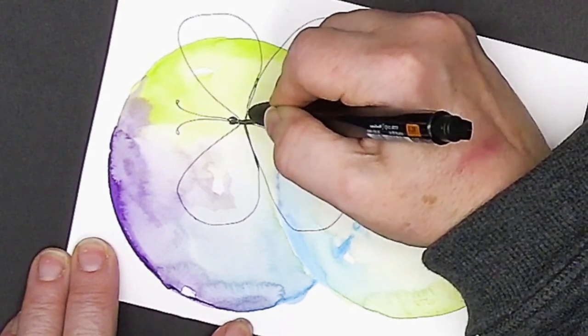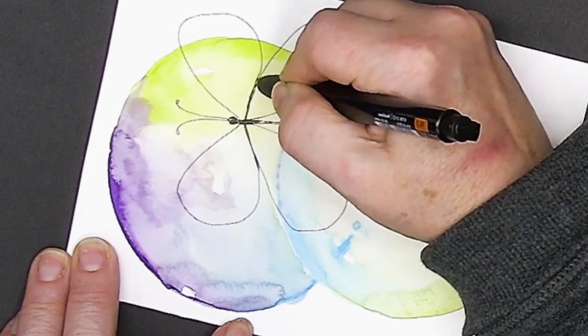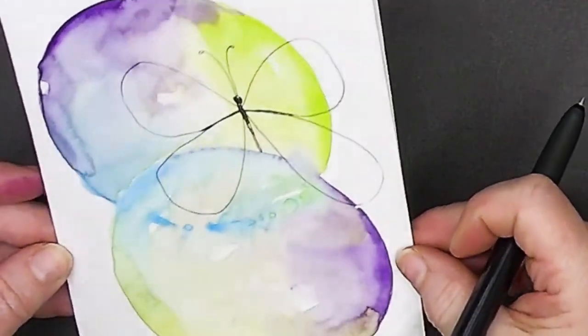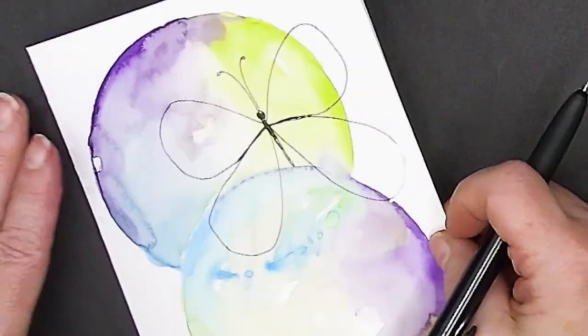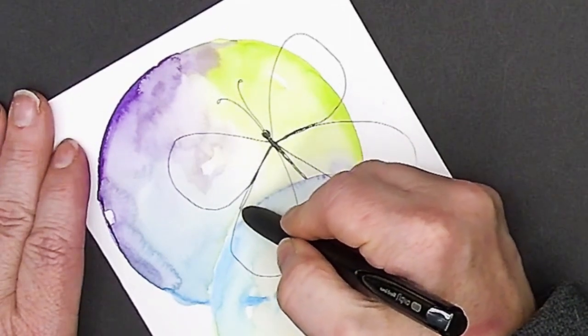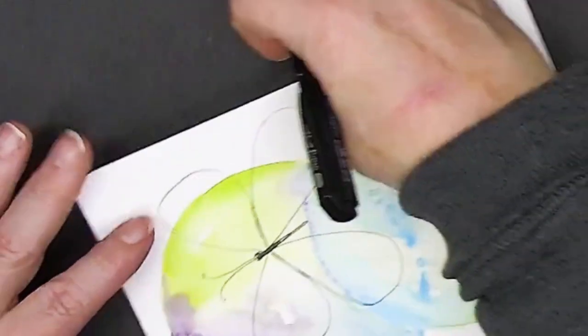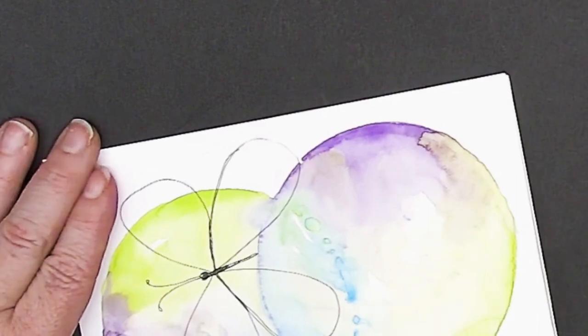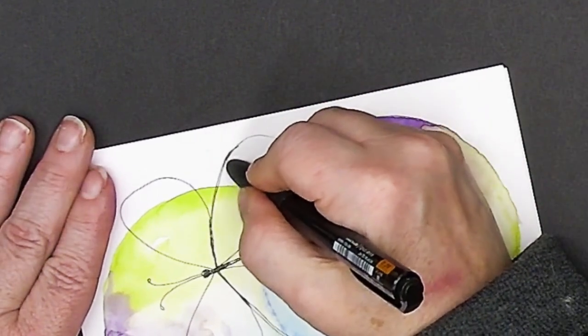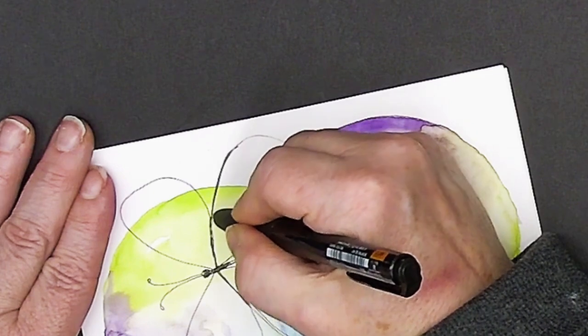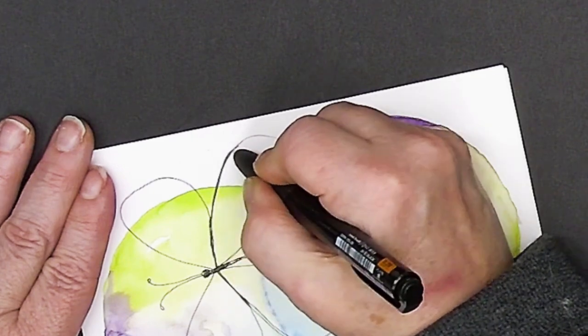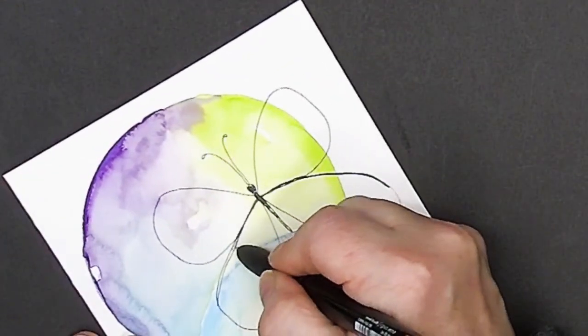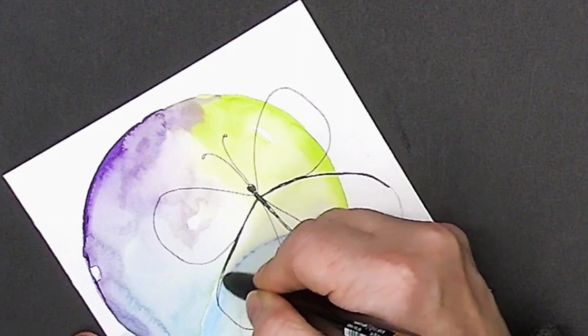This is all doodling now guys. This is not official drawing. But look at that. Oh I like that. I like that shape. And now what I can do is I can go along and I can thicken up an edge. And I can thicken up an edge. And then all I'm going to do is color it in with this pen. I'm not using any other colors on this. This is just doodling. I like a little bit of a thickened edge on the wings.